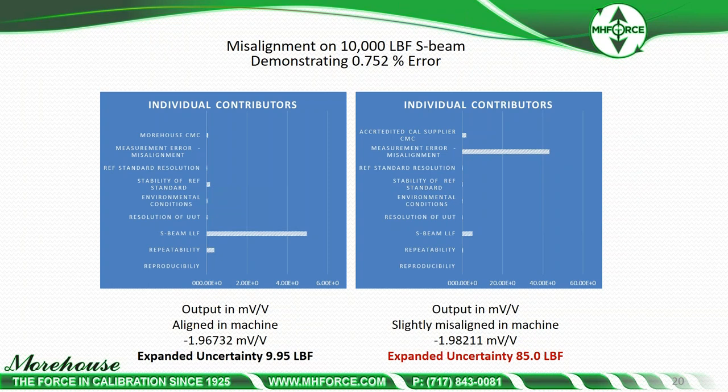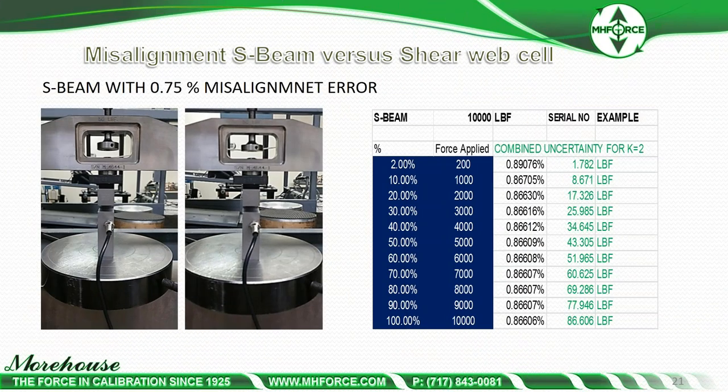From just that eighth-of-an-inch misalignment, if we look at all uncertainty contributors, the expanded uncertainty when aligned and doing an E74 calibration on the left is 9.95 pounds on a 10,000-pound load cell. If we slightly misalign it, our uncertainty jumps from 9.95 to 85 pounds. If we do a combined Welch-Satterthwaite uncertainty analysis, what we think is good to 9.95 pounds becomes 86.606 at the 100% point — and it progressively gets worse.